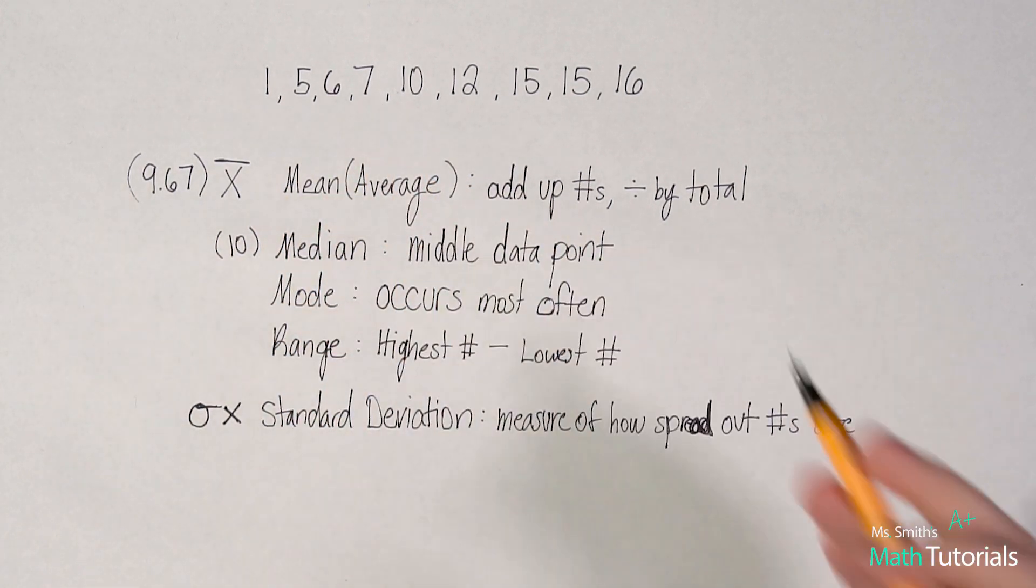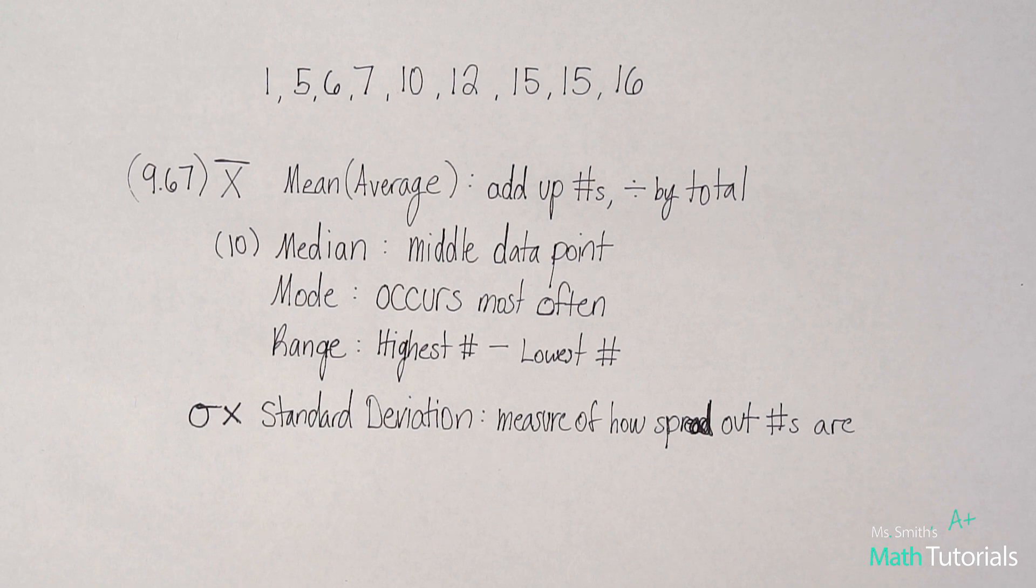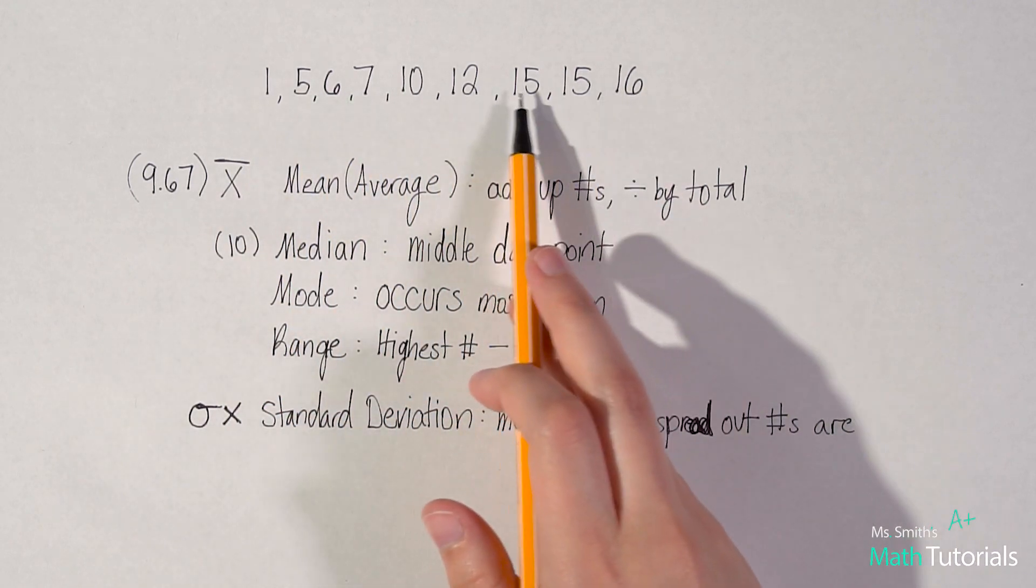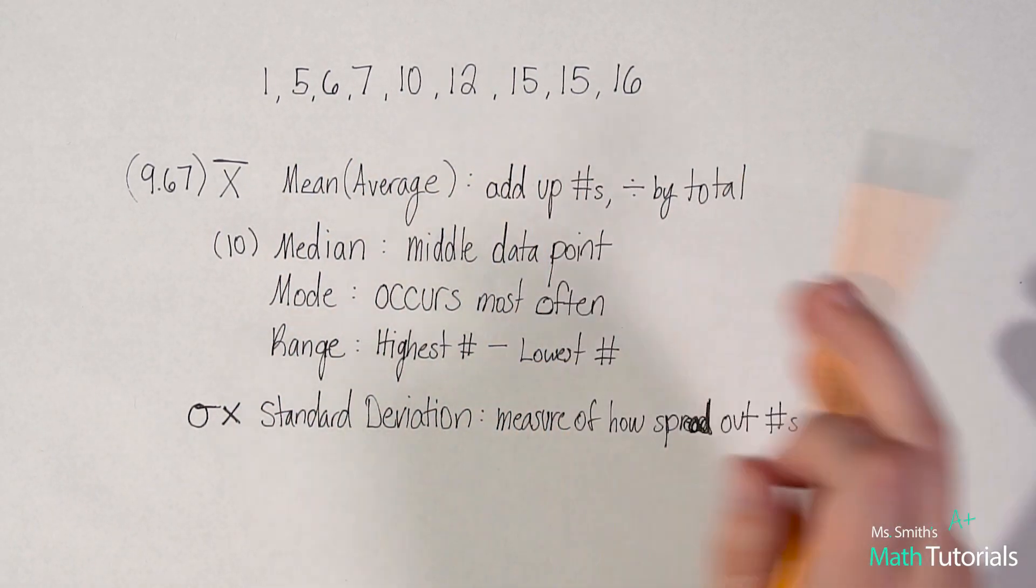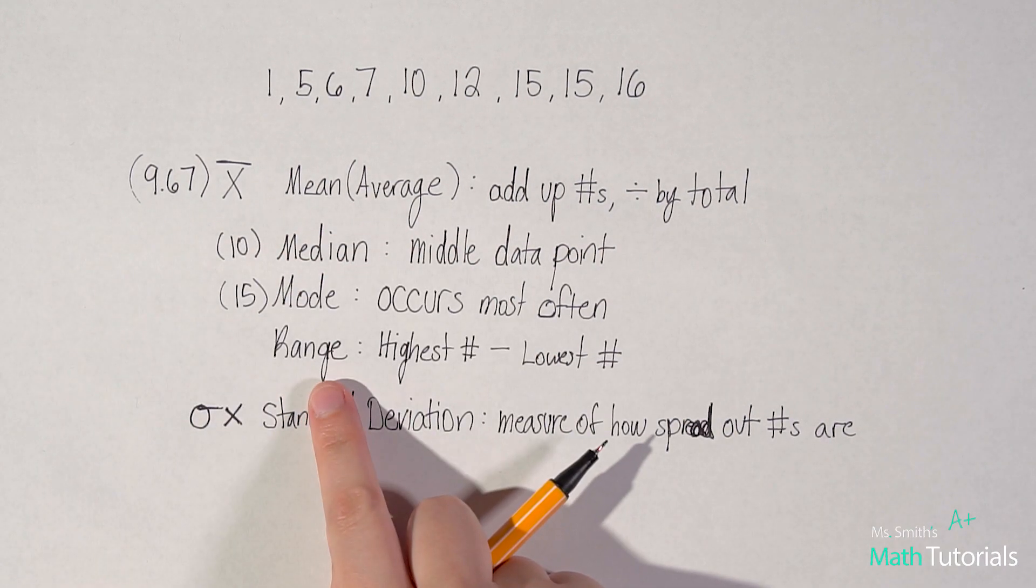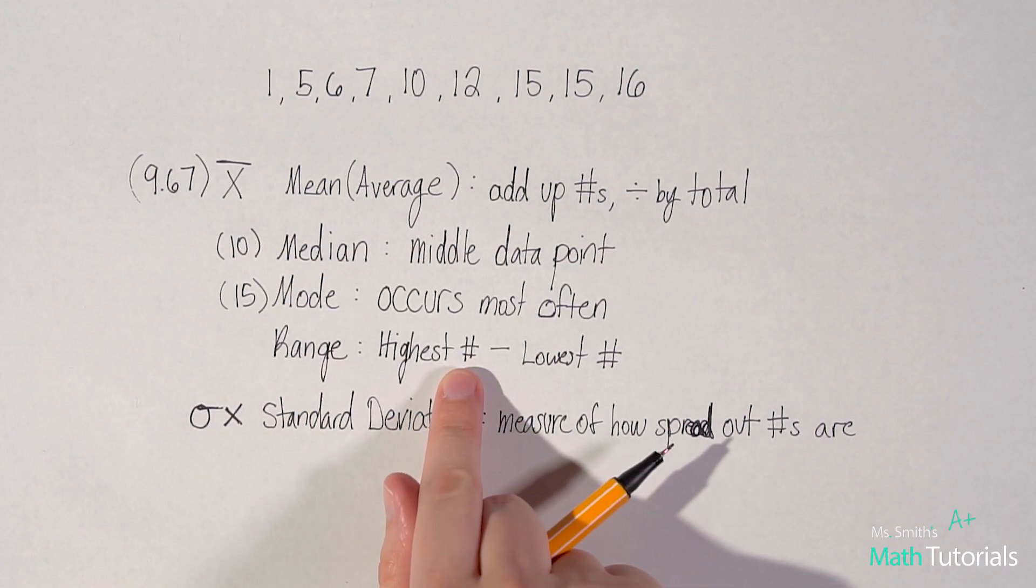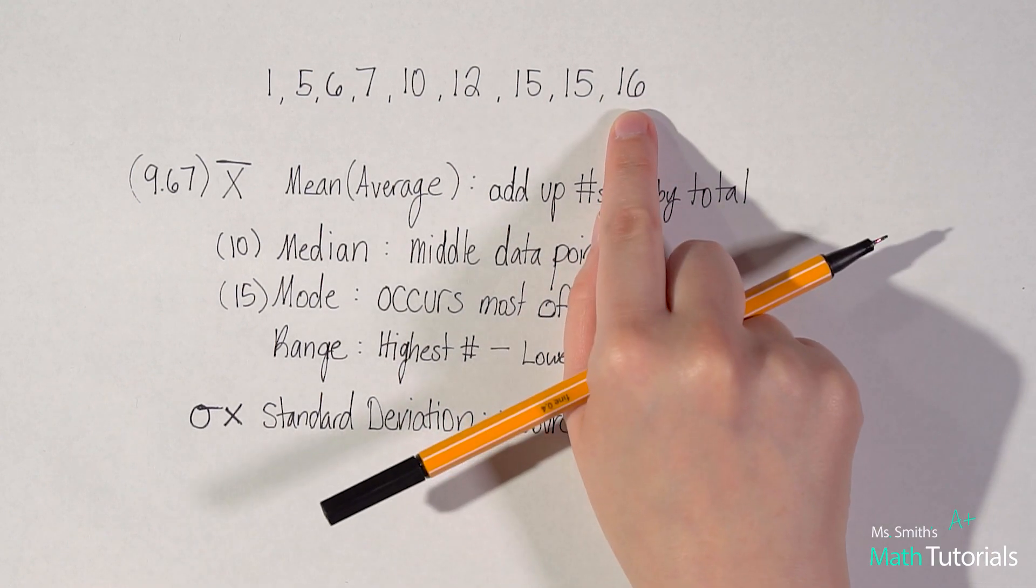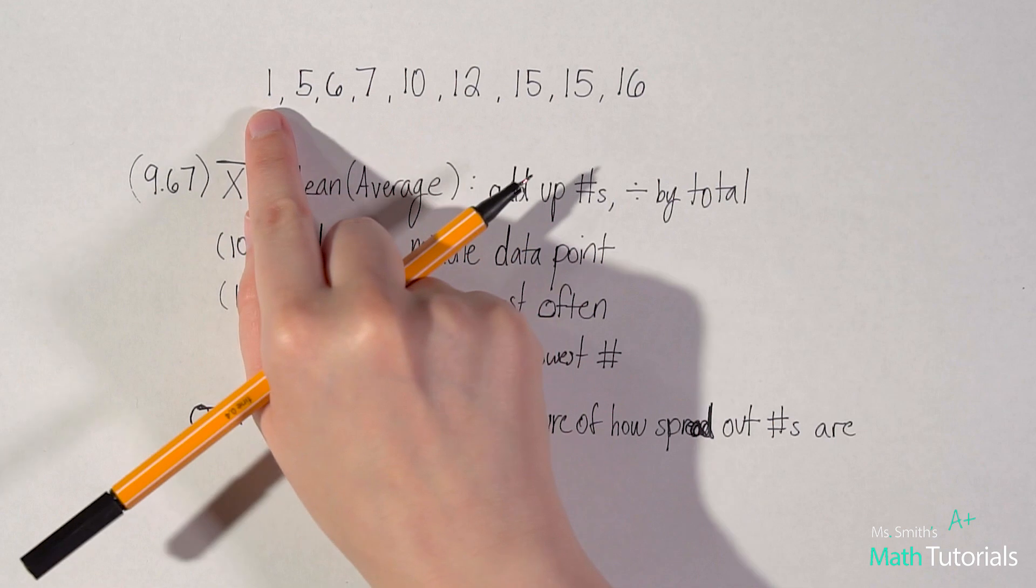Sometimes it could be that you have no mode. If you have no repeating data, you would have no mode. Or you could have more than one mode. Like if you had something multiple numbers that repeated the same number of times, you could have more than one. Looking at my data here, I only have one repeat, and it's right here with the 15s. So my mode would be 15. All right, for my range, that is the highest number minus the lowest number. So I see my highest number is 16, and my lowest number is one.